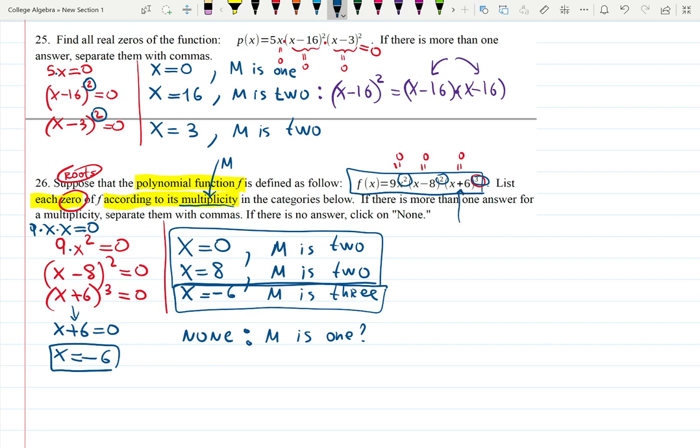Definitely don't mess up with the signs. Like x+6, don't forget that the root is always x minus the root, x minus x₀, and that's my root or zero. So if it is x+6, the root is -6.